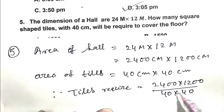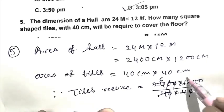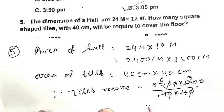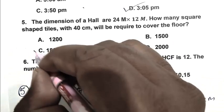Therefore, tiles required equals hall area divided by tile area. So 2400 × 1200 divided by 40 × 40 equals 1800. So C is the right answer.